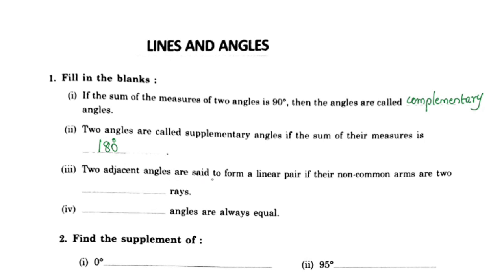Two adjacent angles are said to form a linear pair if their non-common arms are opposite rays. For two adjacent angles, the non-common arms form a straight line, so they are called a linear pair. These adjacent angles share a common vertex and common arm, and the non-common arms are on opposite sides.